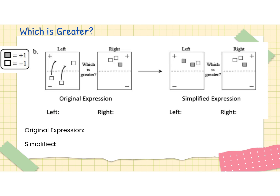In this next case, we actually have an original expression that has values that live in the opposite region on the left side. On the top we have negative one, negative one, and then in the bottom negative in parentheses — that indicator is what we use to show there are values in the opposite region on the bottom, giving us a negative two value there. On the right-hand side, we have one minus two.